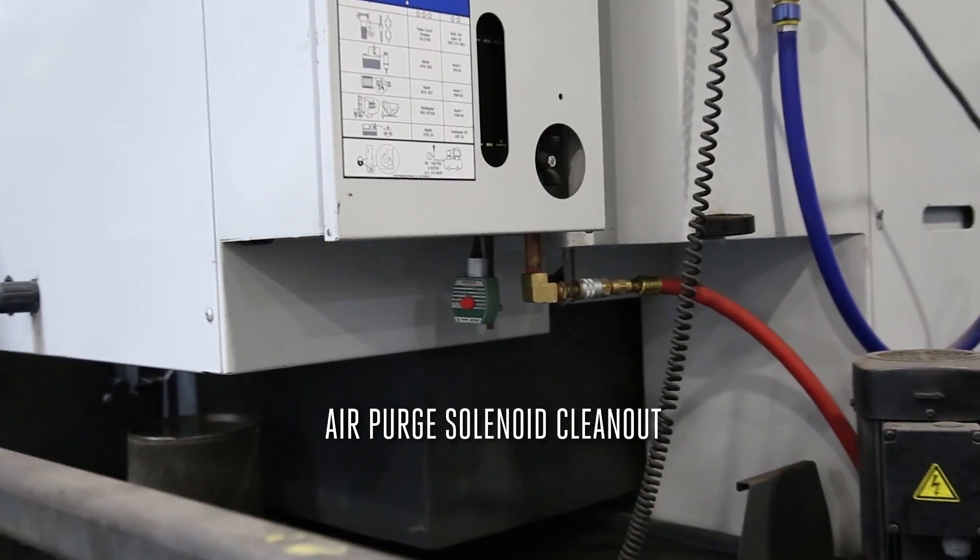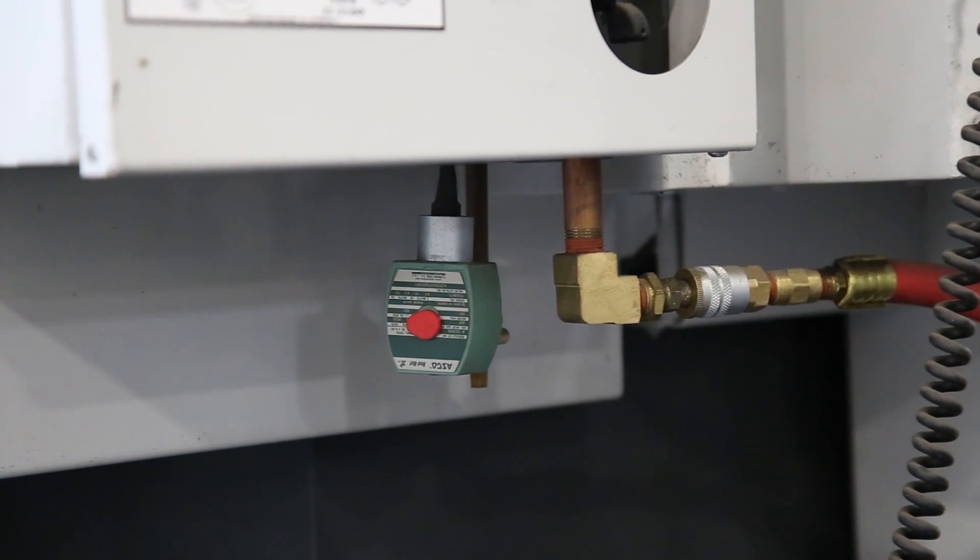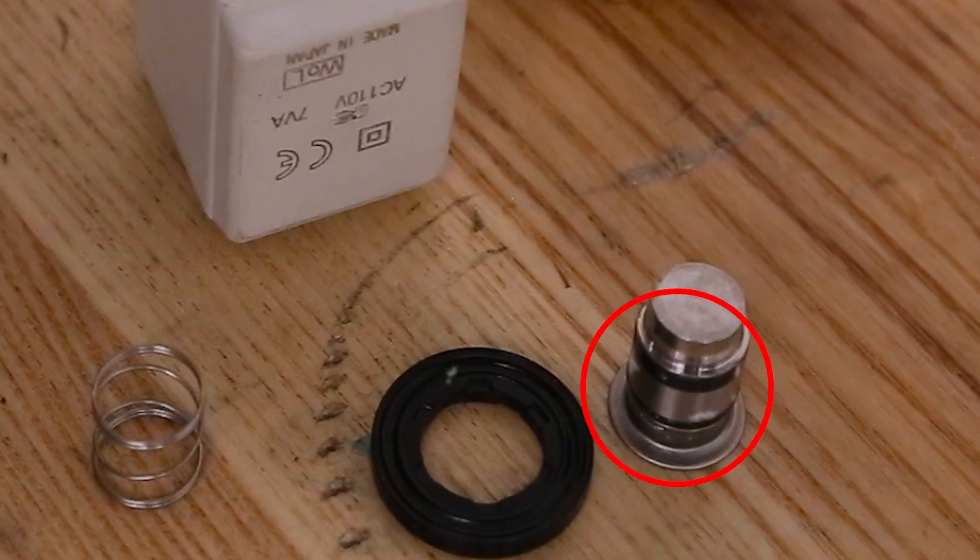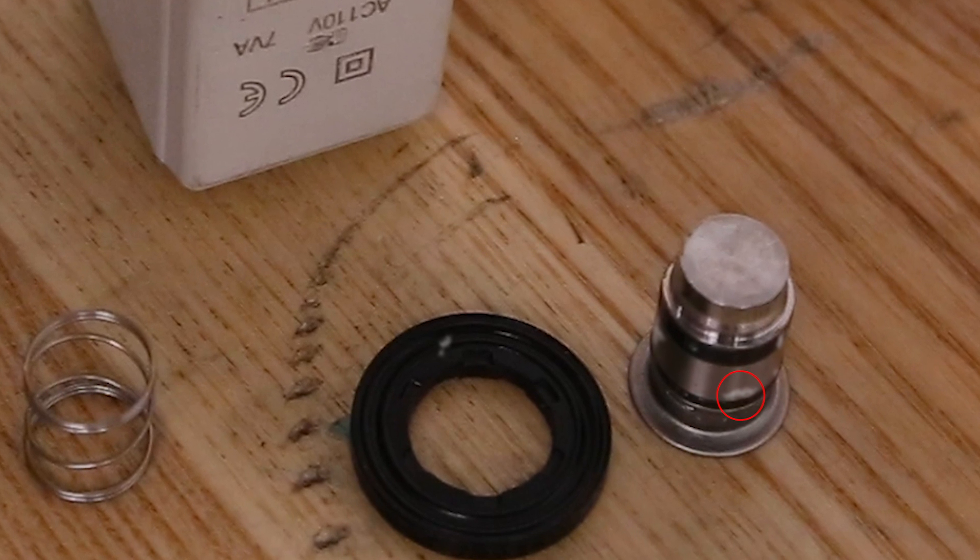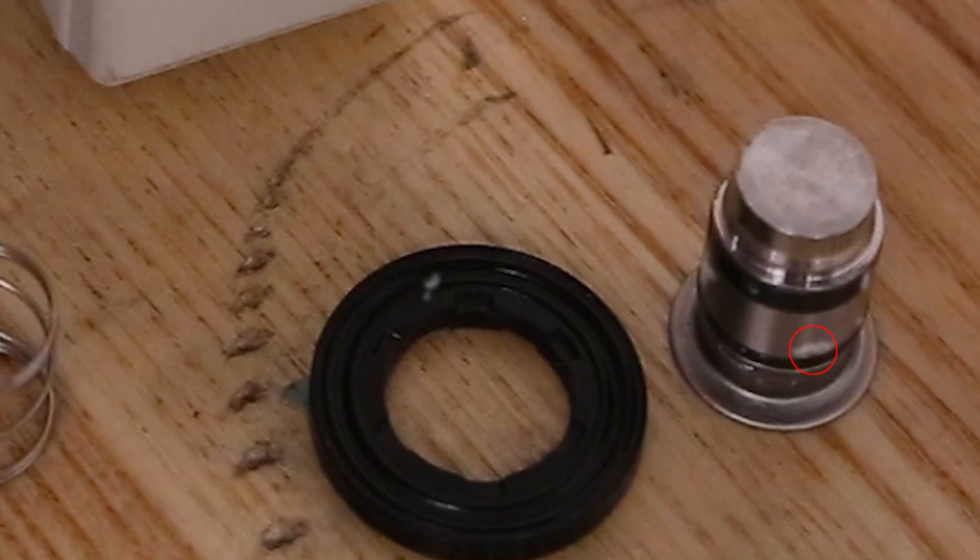If the air purge valve on your Haas machine is leaking or not functioning correctly, the most likely cause is debris inside the air purge solenoid. Cleaning out the solenoid is a quick and easy way to restore the air purge system to its full functionality.